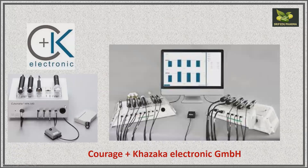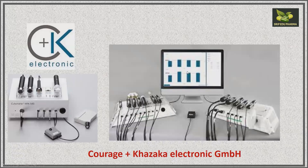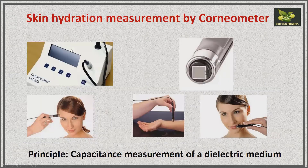This is the logo of the Courage and Khazaka company. Here you can see the cutometer with various probes attached, along with a computer monitor displaying the software. When using any probe, you select it in the software — for cutometer you select cutometer, for sebometer you select sebometer. The corneometer CM825 is shown here; this is the probe disk that measures capacitance. You can measure skin hydration on any area — forehead, palm, lips, cheeks.